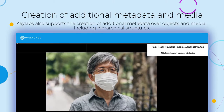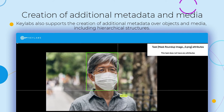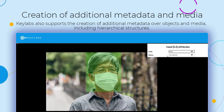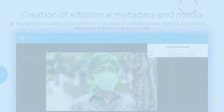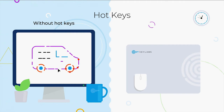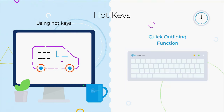Keylabs also supports the creation of additional metadata over objects or media, including hierarchical structures. Keylabs is designed to work faster than traditional annotation techniques. To achieve this, the tool incorporates a number of streamlining functions.